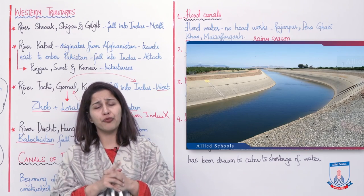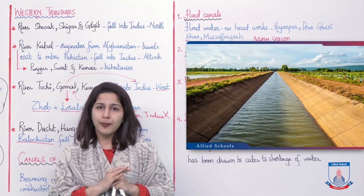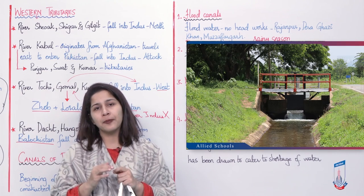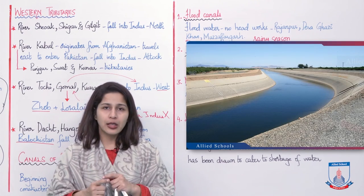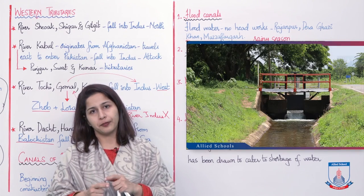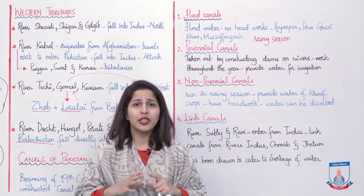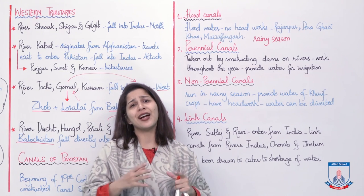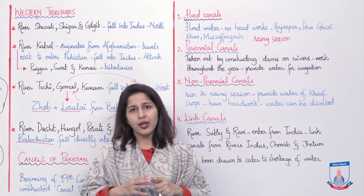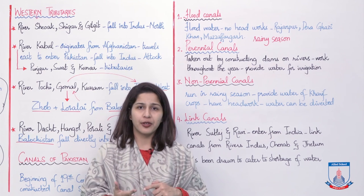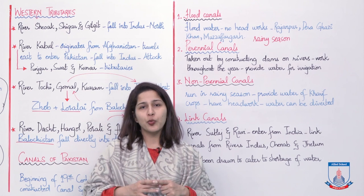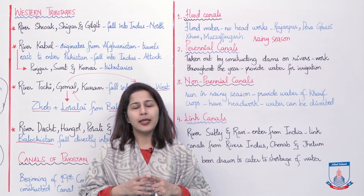The map on screen shows the four types of canals — flood canals, perennial canals, non-perennial canals, and link canals — so you can understand how they work. Understanding this entire water system and its location was important because we are discussing the land and environment of Pakistan. Water is essential both for human life and for our country to thrive. The location of these rivers and canals is very important. In the next lecture we will discuss and cover the forest regions of Pakistan. Allah Hafiz.